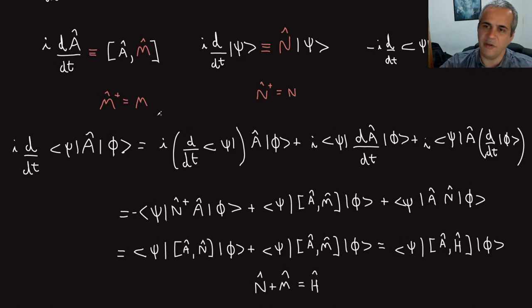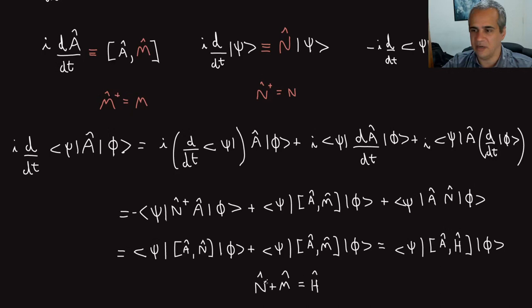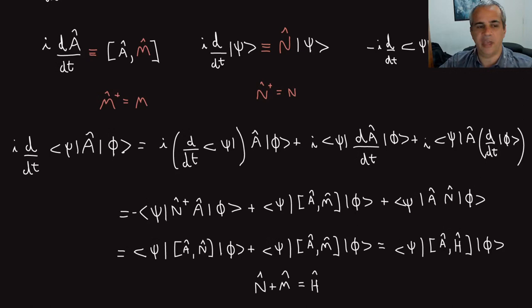This is essentially what pictures are: a picture in quantum mechanics is a choice of N and M. The usual choice is M equal to the Hamiltonian and N equals zero, or vice versa. But you can make more complicated choices — you are simply dividing the Hamiltonian into pieces that are additive, with some pieces evolving states and others evolving operators.